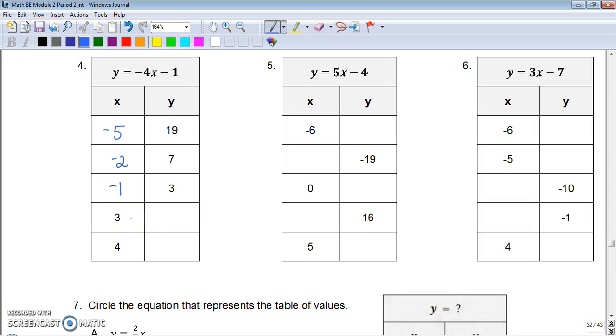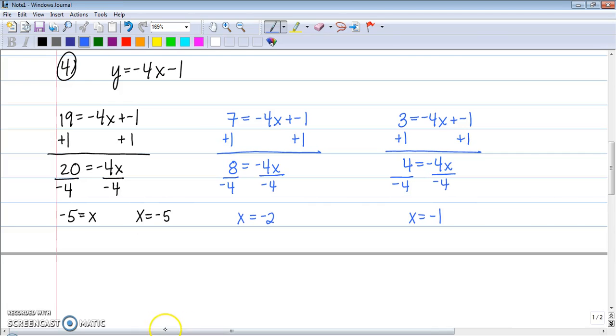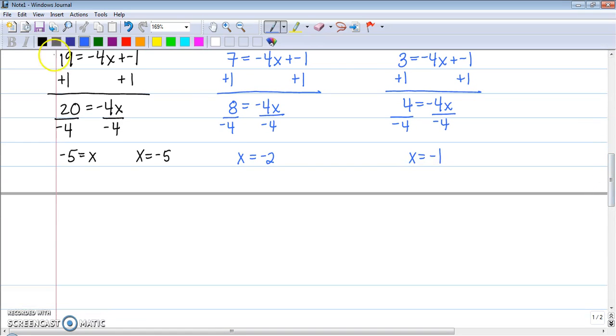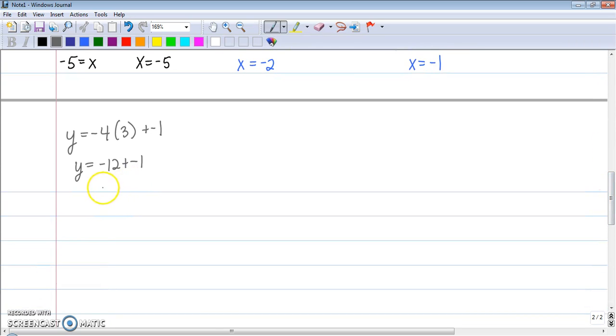Now we're going to go and we're going to do the other way, the easier way, which is now we're going to plug in 3 and 4 for x. So first one is to plug in 3. So negative 4 times 3 plus negative 1. Negative 4 times 3 is negative 12 plus negative 1. Y equals negative 13. And we're also going to plug in positive 4. Negative 4 times 4 is negative 16 plus negative 1 is negative 17.